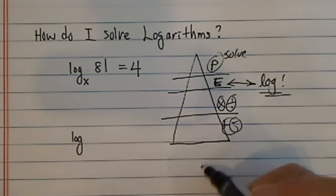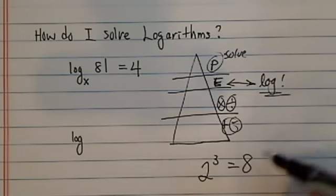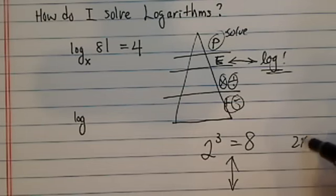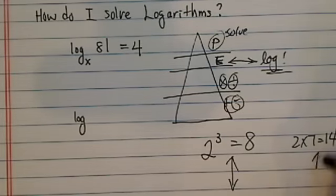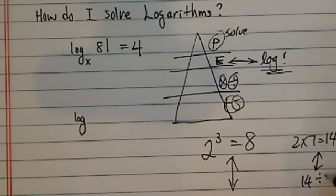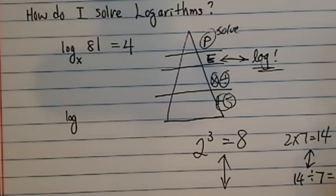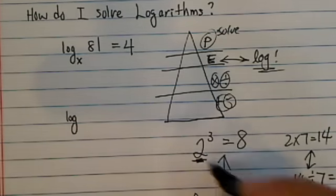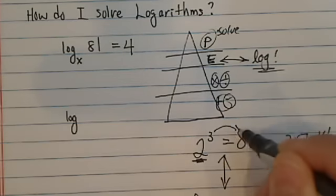So when we have 2 to the 3 equal to 8, another way to write this one, just like 2 times 7 equal to 14, we can also write 14 divided by 7 is equal to 2. So here we're going to write it, log base, take the same base, now swap those two.